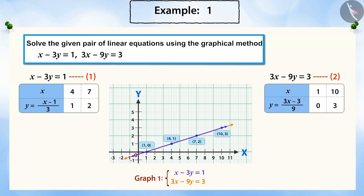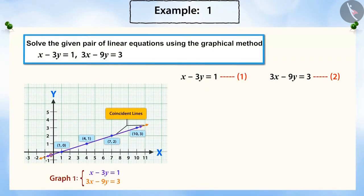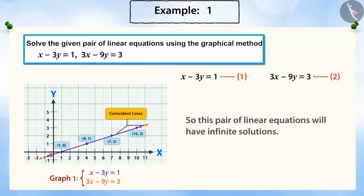You can see that these two lines are coincident lines. Can you tell what this means? This means that the pair of equations is a dependent, consistent pair. So, this pair of linear equations will have infinite solutions.